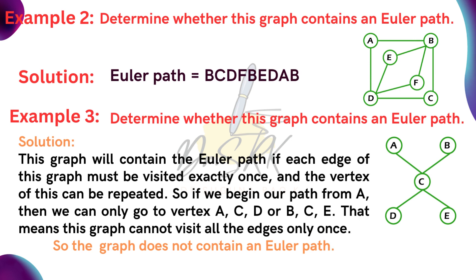Look at another example — example number 2: determine whether this graph contains an Euler path. Yes, it should contain an Euler path because each and every vertex has degree exactly 2. Applying the definition, it contains an Euler path. If we begin from B, then go to C, C to D, D to F, F to B, B to E, E to D, D to A, A to B. So example number 2 also has an Euler path.